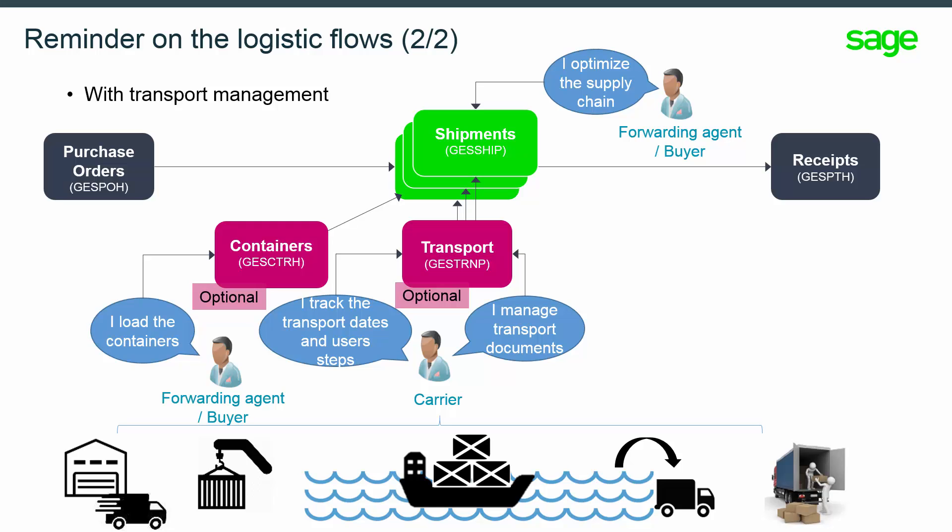The benefit in using the transport function is to be able to track and manage this information once for multiple shipments from different companies sharing the same vessel, for instance. Once a transport exists, the transport information will prevail on the shipping information.